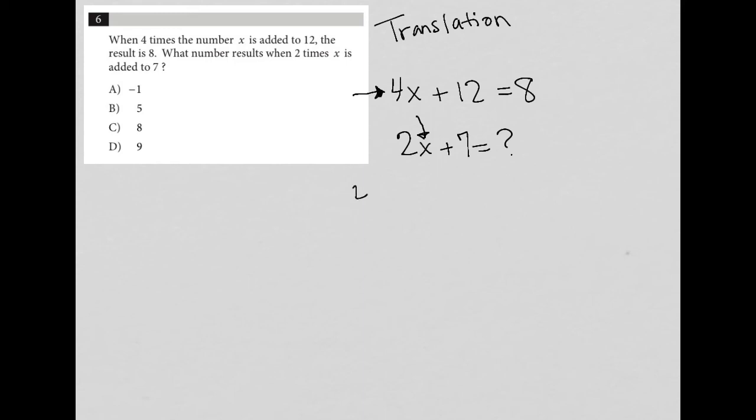So in simplifying the 4X plus 12 equals 8, I would subtract 12 from both sides. I'd end up with 4X equals negative 4. I'd divide by 4, both sides, and I'd end up with X equals negative 1.